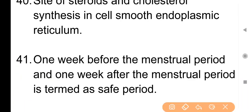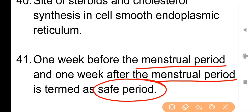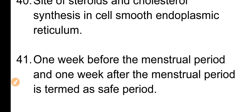Point No. 41: One week before the menstrual period and one week after the menstrual period is termed as the safe period. Menstrual bleeding के पहले एक सप्ताह और बाद में एक सप्ताह — safe period के नाम से जाना जाता है। इस दौरान sexual intercourse करने से conceive होने के chances बहुत ही कम होते हैं।